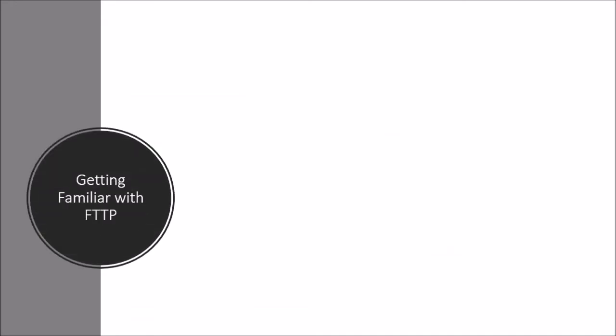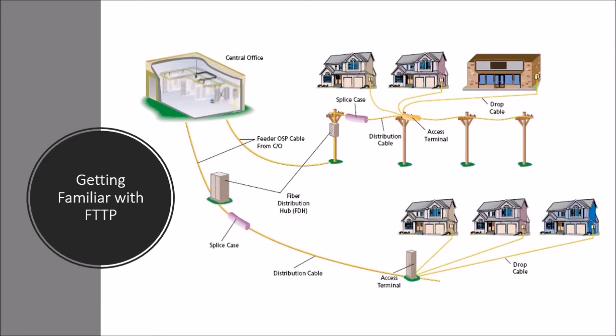Now let us take a look at the FTTP network architecture and see how it works. We have the central office on one end and the customer premises at the other extreme end. The fiber distribution hub is connected to the central office by distribution cables. The FTTP access terminal remains connected by distribution cables. Lastly, drop cables connect the access terminal to the customer premises.